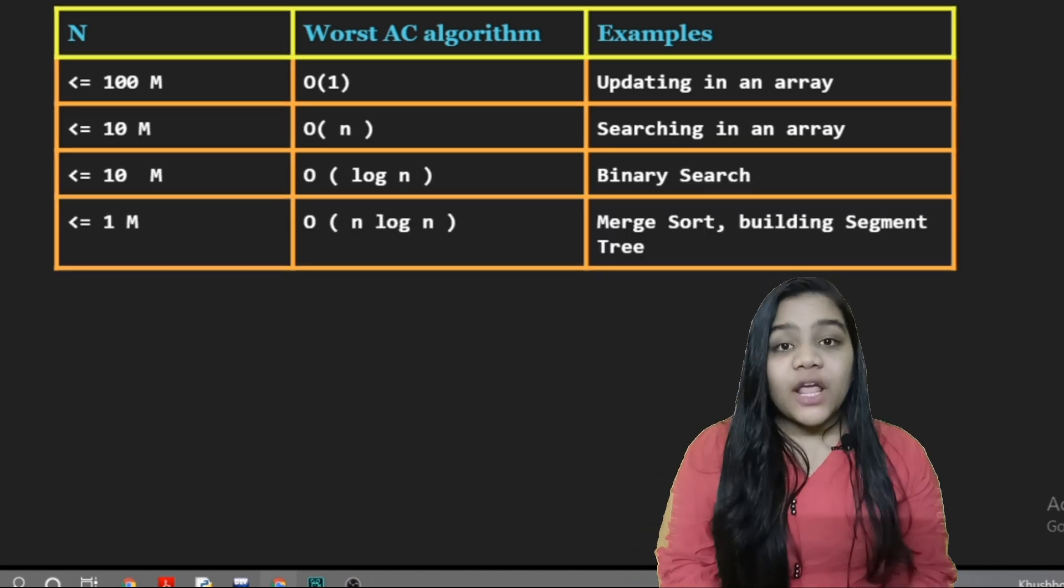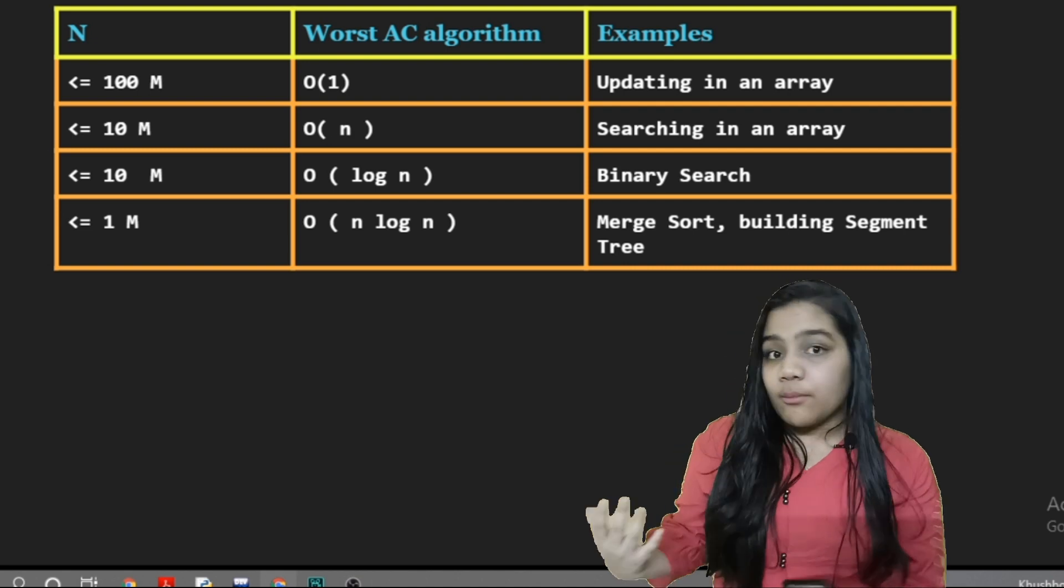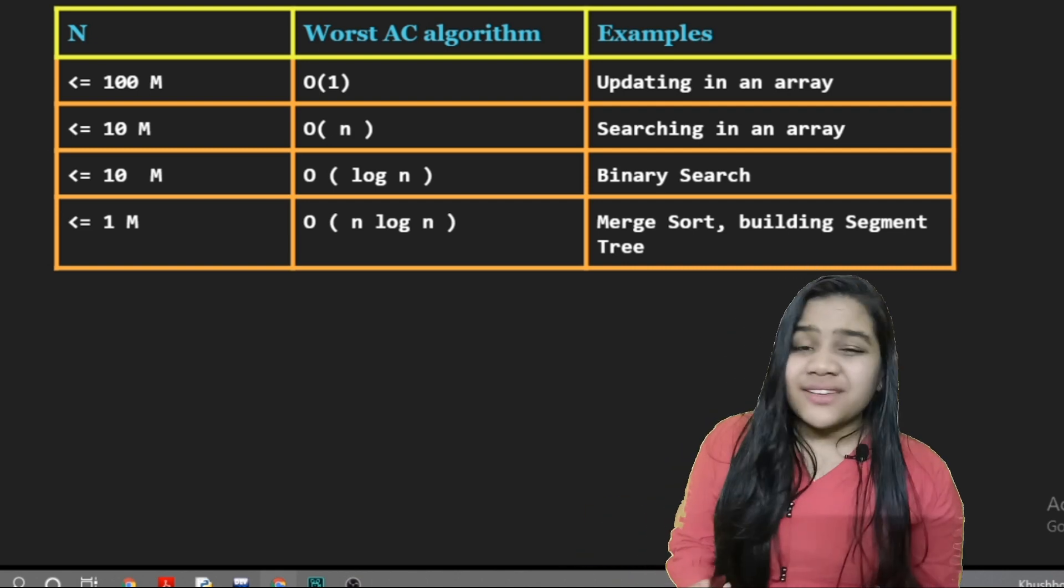If we have given the input range up to 1 million, then we can have the time complexity of n log n. We can do something like merge sort or maybe building a segment tree.